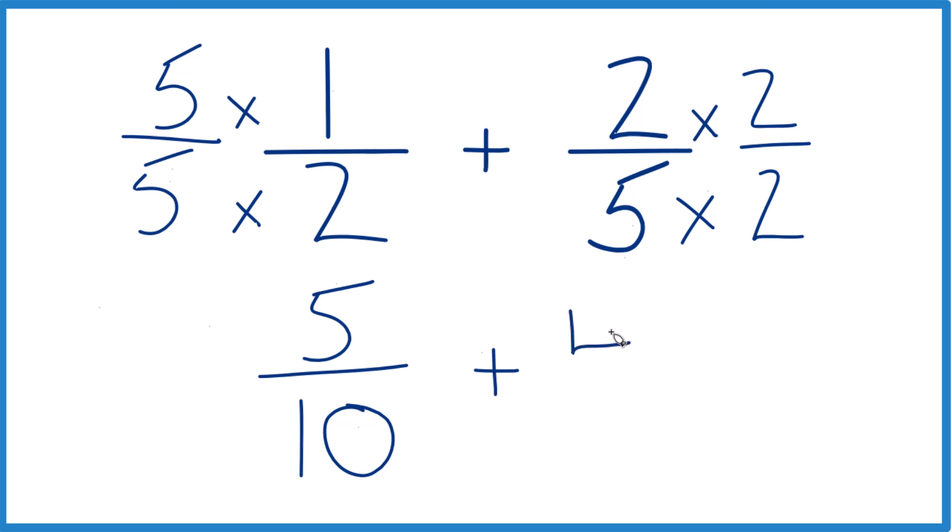Over here, two times two is four. Five times two, that would give us ten.